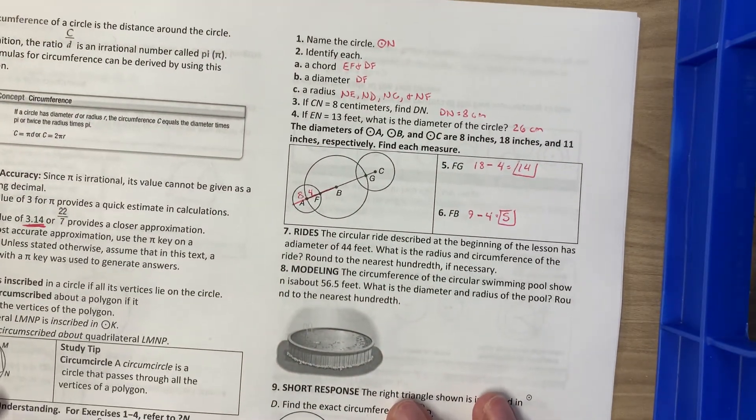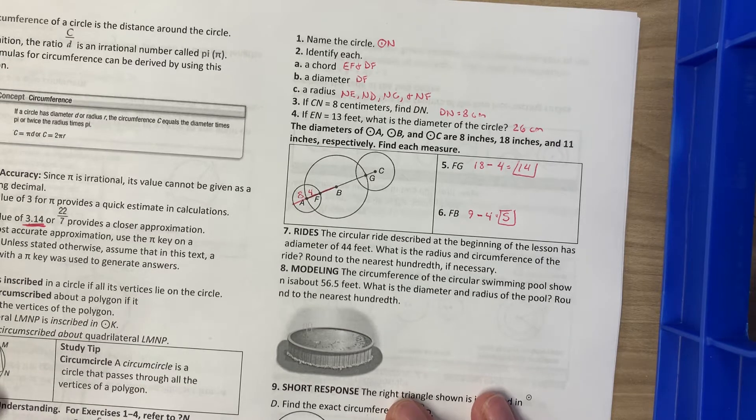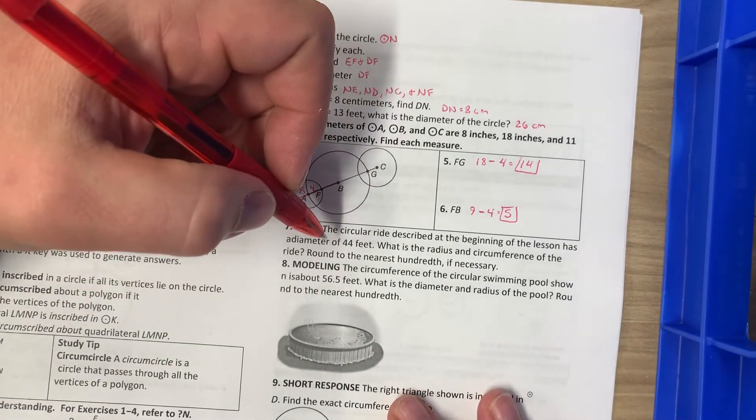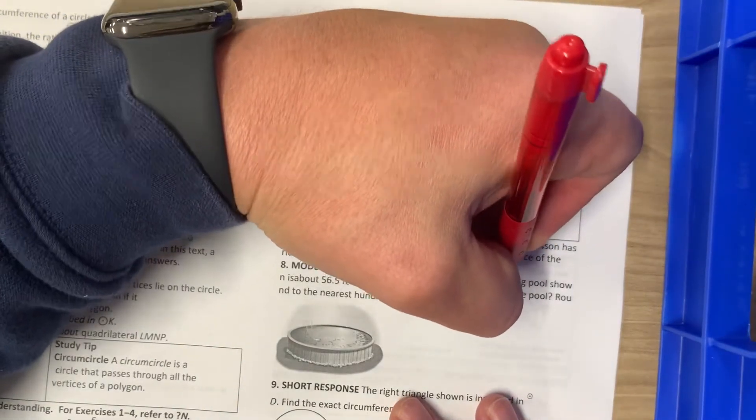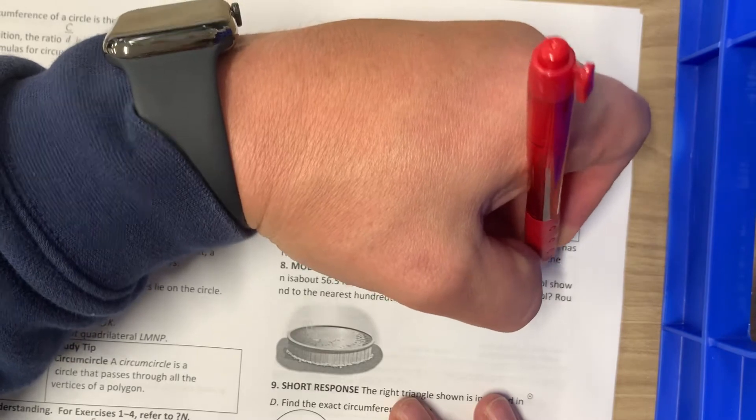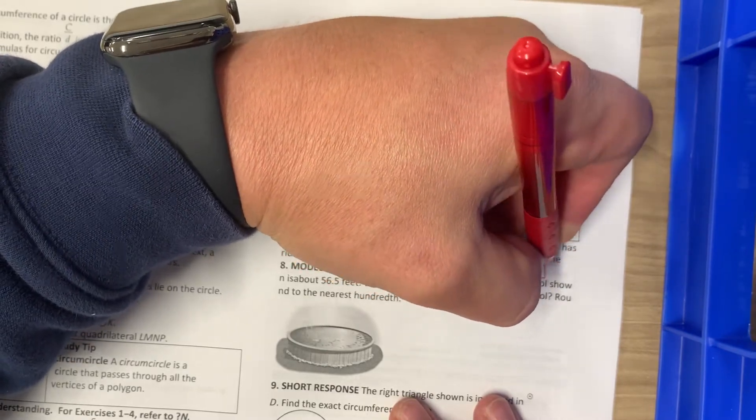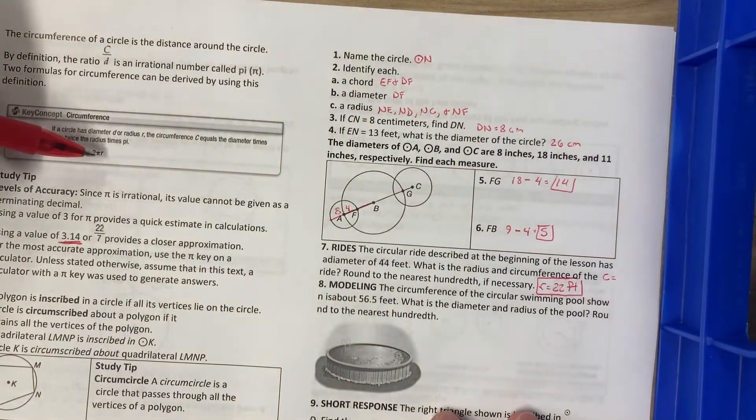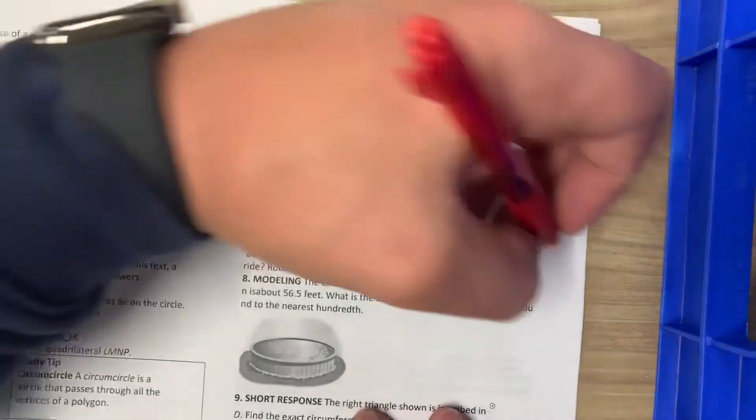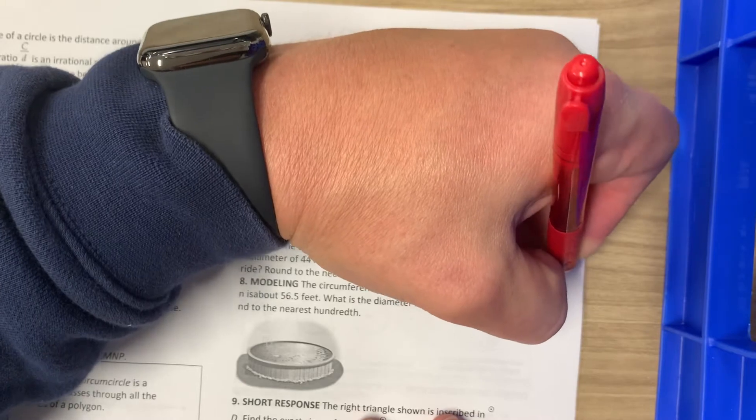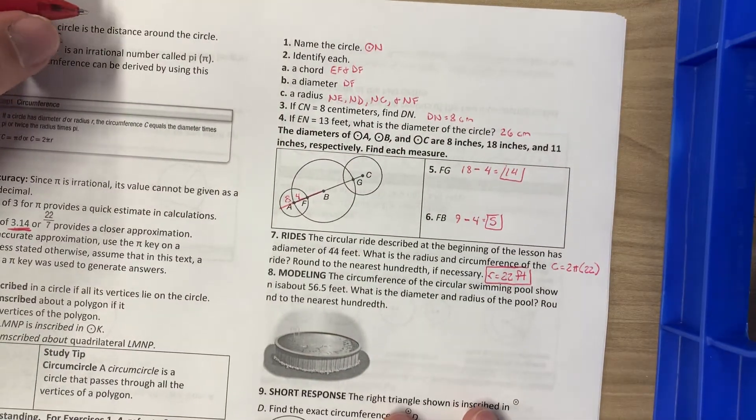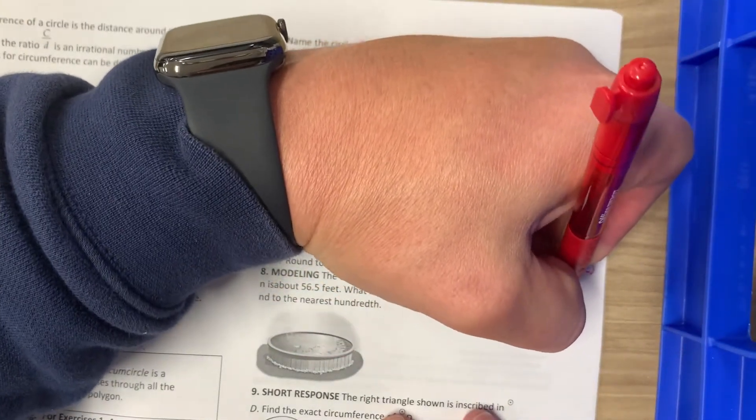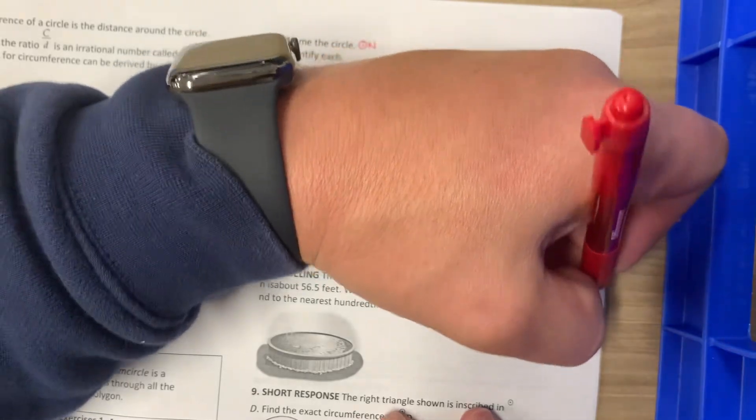The circular ride described at the beginning of the lesson has a diameter of 44 feet. What is the radius and circumference of the ride? Round to the nearest hundredth if necessary. If the diameter is 44, the radius is going to be half as much of the diameter, so it's 22 feet. For the circumference, we can use either formula because we have both the diameter and the radius. I used the one with the radius, 2 pi R. So 2 pi and then R is 22. I put that into our calculator, 2 times the pi button times 22. C equals 138.23 feet.